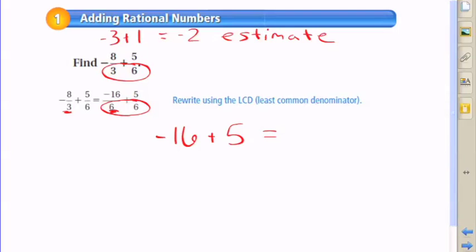And now that they have the same denominator, we can add the numerators, which is what I'm doing here. Negative 16 plus 5. Use what you know about absolute value to find the answer for this. The higher absolute value belongs to negative 16, so we're going to subtract the absolute value of 5 from the absolute value of negative 16. So 16 minus 5 is 11.